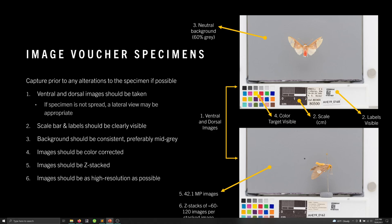The scale bar and labels should be clearly visible. In particular, the label should be set aside — removed from underneath the specimen and placed to the side. Especially because these images may be used downstream for various purposes, having labels behind the specimen may impede visual analyses. The background should be some consistent color; in my opinion, the best option is a mid-gray, and in this case I'm using a 60% gray background.